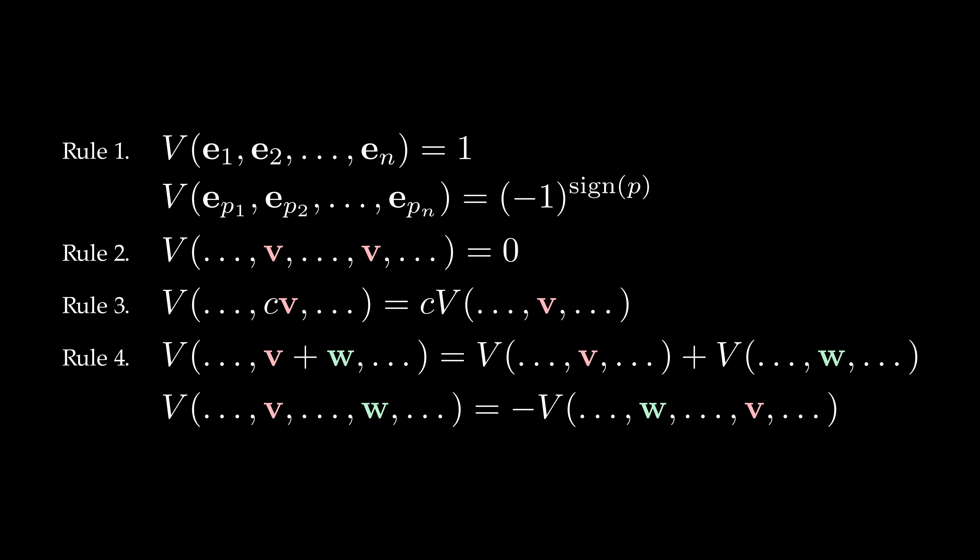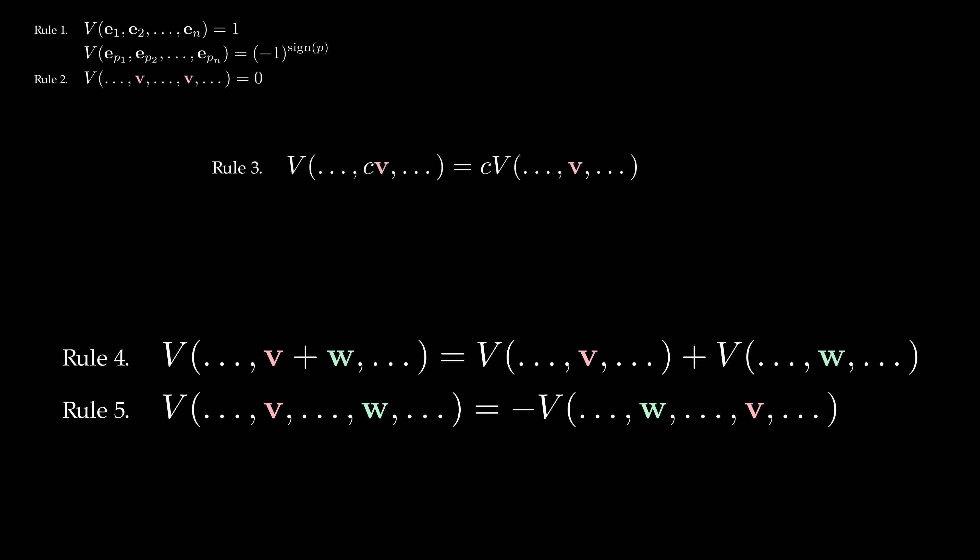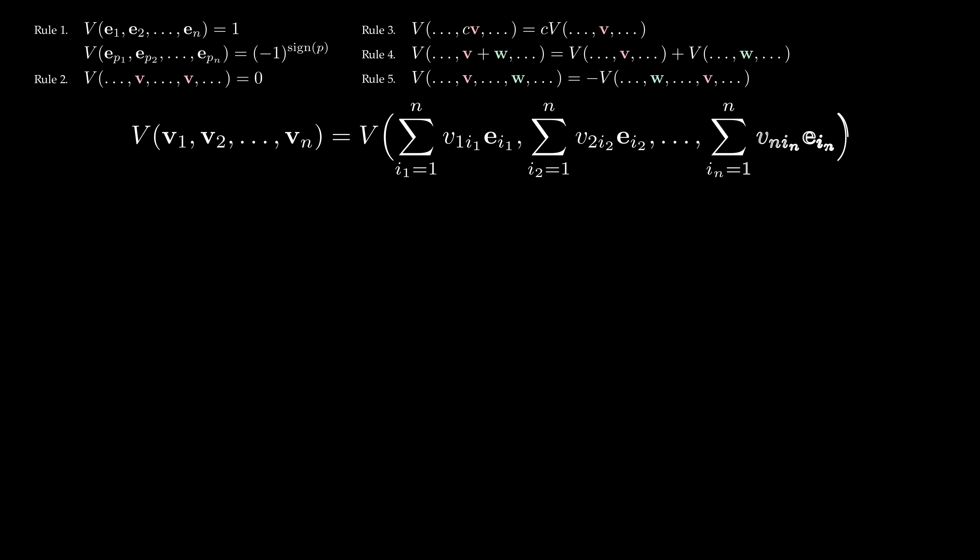And finally, swapping two slots amounts to introducing a minus sign, tracking the orientation of space. Now, we can do the same calculations as we did before, but in n dimensions.